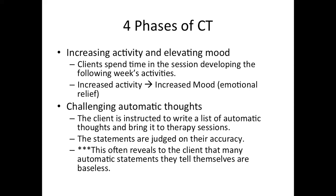We also challenge automatic thoughts. When we ask a person to engage in a thought record where they write down their knee-jerk thoughts and bring it to therapy, we put those thoughts on trial. To evaluate an automatic thought, we ask: what evidence do you have to support this thought? The person presents whatever evidence there is — sometimes there isn't any. Then we ask for counter-evidence: what evidence do you have against this conclusion? Based on the totality of the evidence, we evaluate the thought for accuracy. It often helps a person realize that their maladaptive automatic thoughts have very little evidence supporting them, making them easy to confront.